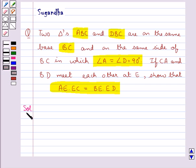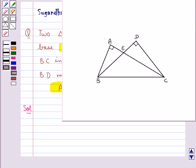Let's move on to the solution. This is the figure where we have triangle ABC and triangle DBC on the same base BC and on the same side of BC, and we have angle A and angle D as 90 degrees, and CA and BD meet at the point E.